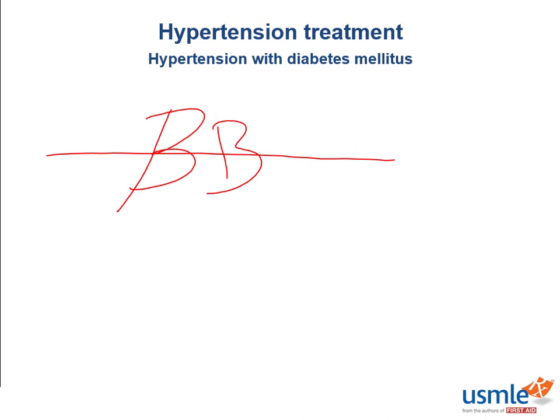If you need help remembering this, recall that propranolol is a beta blocker used to treat performance anxiety. Think about what performance anxiety looks like — you get shaky, nervous, sweaty, and possibly have a tremor. Then think about what hypoglycemia looks like: the same thing — shaky, nervous, sweaty, and possibly a tremor. So you do not want to give beta blockers in these patients to avoid masking those hypoglycemia symptoms.